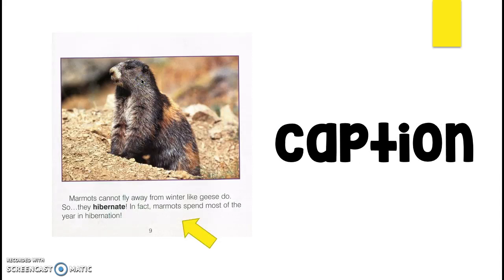A caption is another text feature. Captions work together with photographs. Usually there's a picture, and then a caption is right underneath a picture or a photograph. The caption is just a sentence or two that tells you information about what you'll see in the photograph. This caption says marmots cannot fly away from winter like geese do, so they hibernate. In fact, marmots spend most of their year in hibernation. I'm not sure if I said the word marmot right. Fingers crossed. Anyway, the caption tells us about the picture.